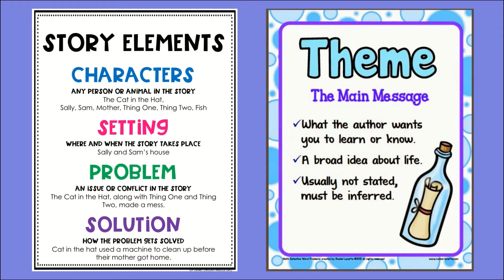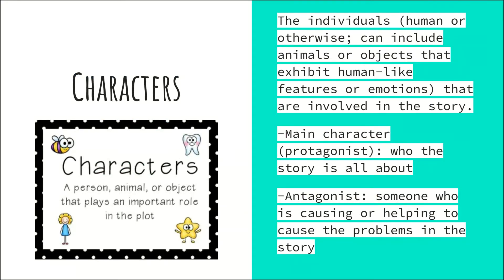The main story elements are character, setting, the plot — which includes problem, solution, and key details — as well as theme. Characters are the individuals, human or otherwise. They can include animals or objects that exhibit human-like features or emotions that are involved in the story. Typically there's a main character, also called the protagonist — who the story is all about and around whom most of the action centers. In Snow White and the Seven Dwarfs, Snow White would be the protagonist. She's the main character, and even though there are many side characters, most of the action centers on her.